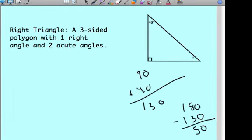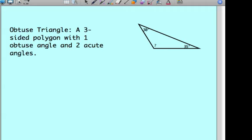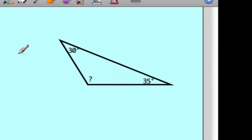Finally, the last example. An obtuse triangle, a three-sided polygon with one obtuse angle and two acute angles. Again, if I had two obtuse angles, let's say they were 91 and 91, which is a pretty small obtuse angle, those two angles would add up to 182 degrees. And so therefore, you can't have two obtuse angles in an obtuse triangle. Just one.